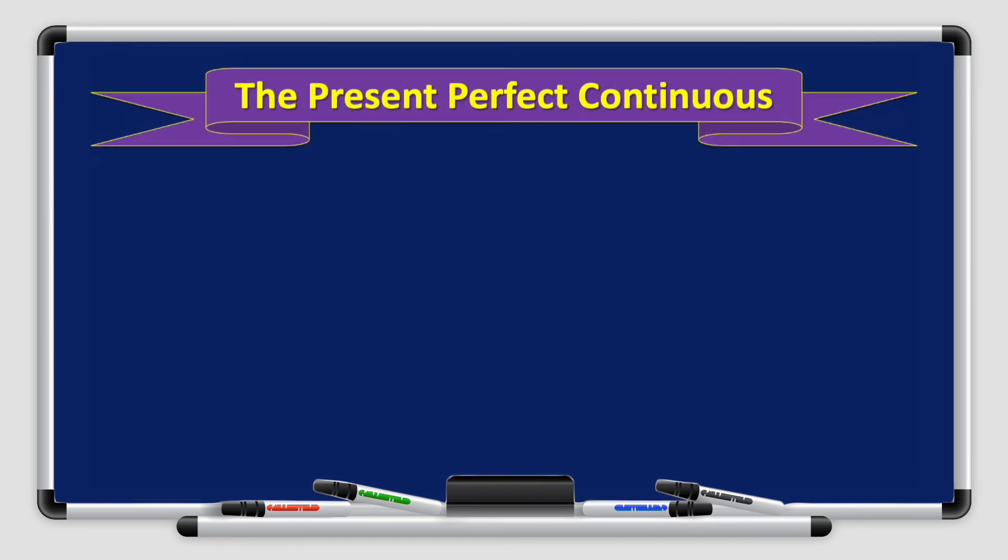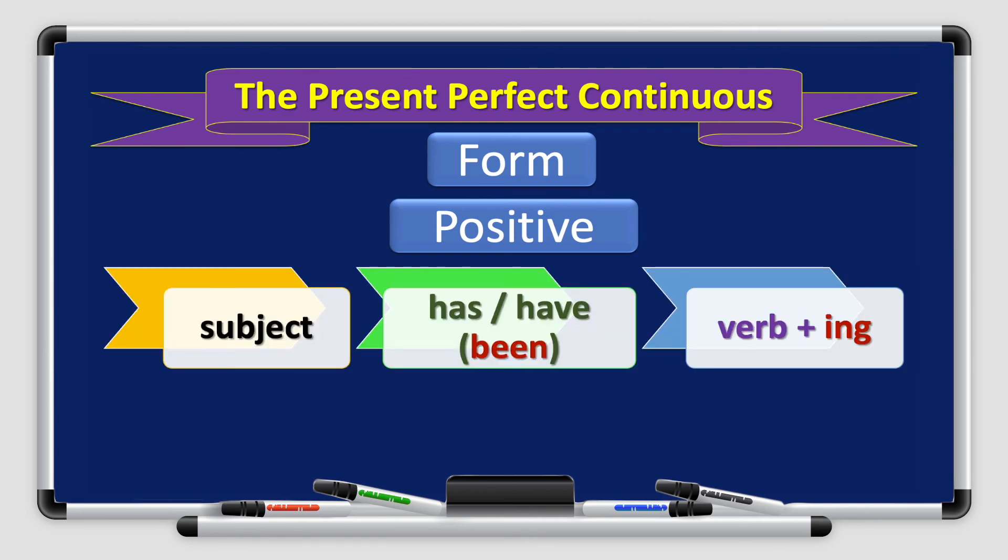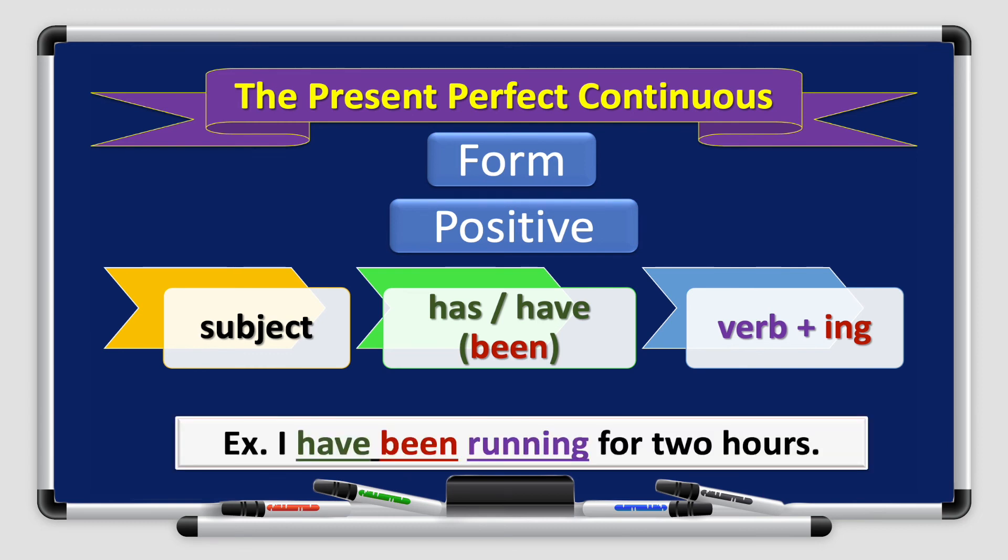Good job. Now that we've looked at the present perfect, it's time to look at the present perfect continuous, which has a similar idea. How do we form the present perfect continuous? You start with the subject, followed by has, have, been, and you end with verb plus ing. So it's continuous. The action is still going on. For example, I have been running for two hours. So you have this continuous action or the effect of the action is still going on.